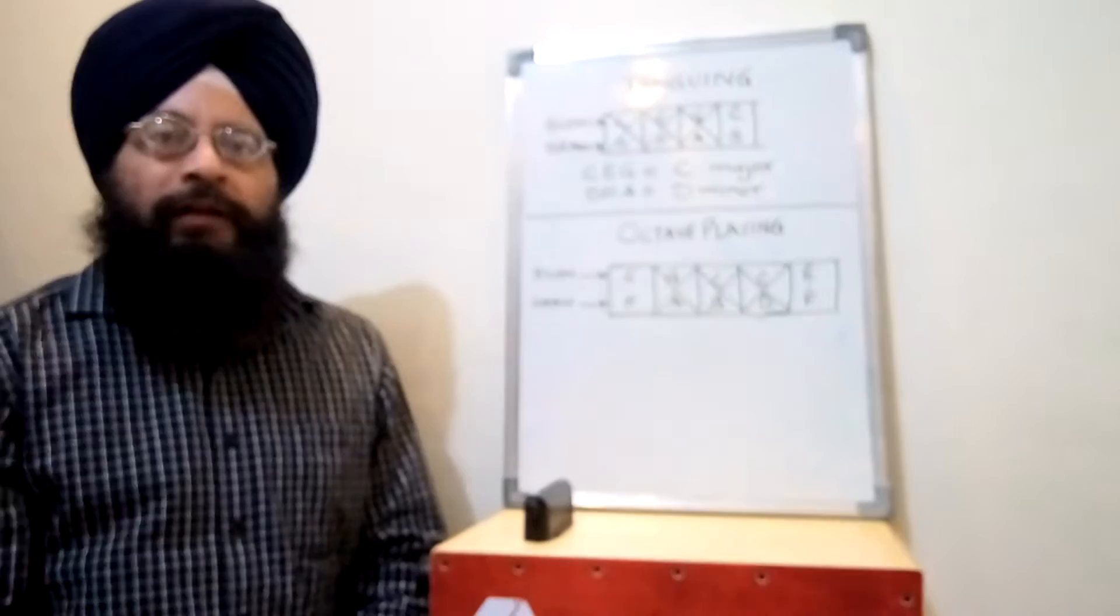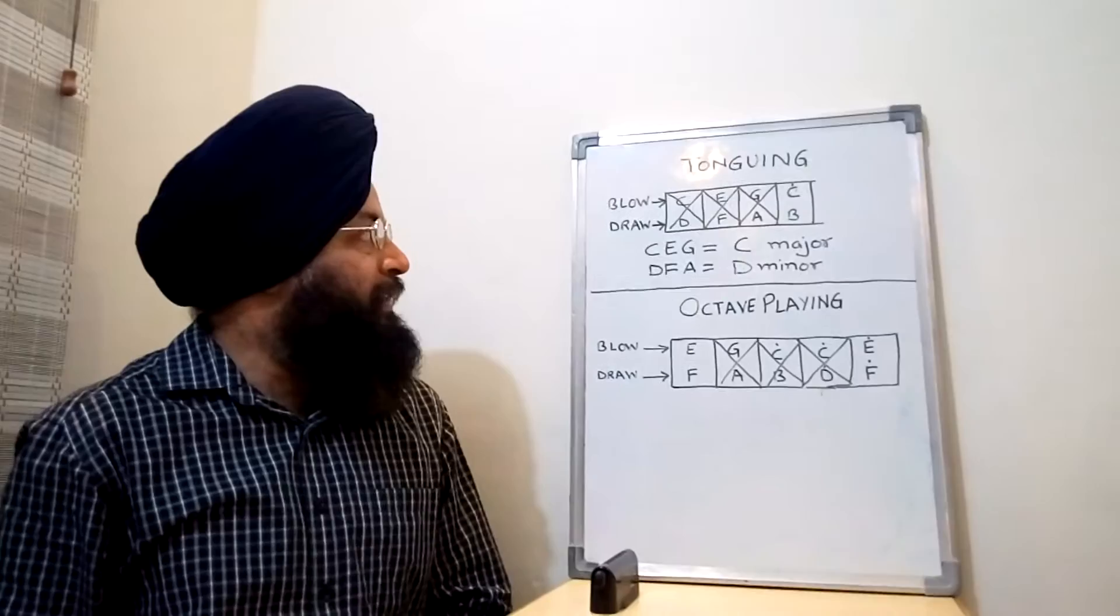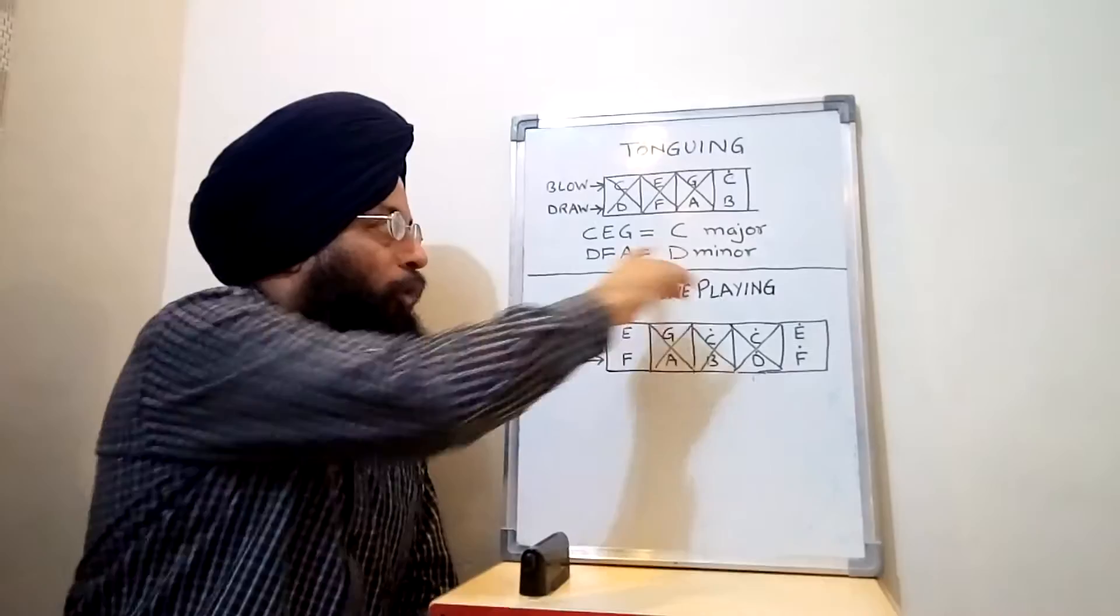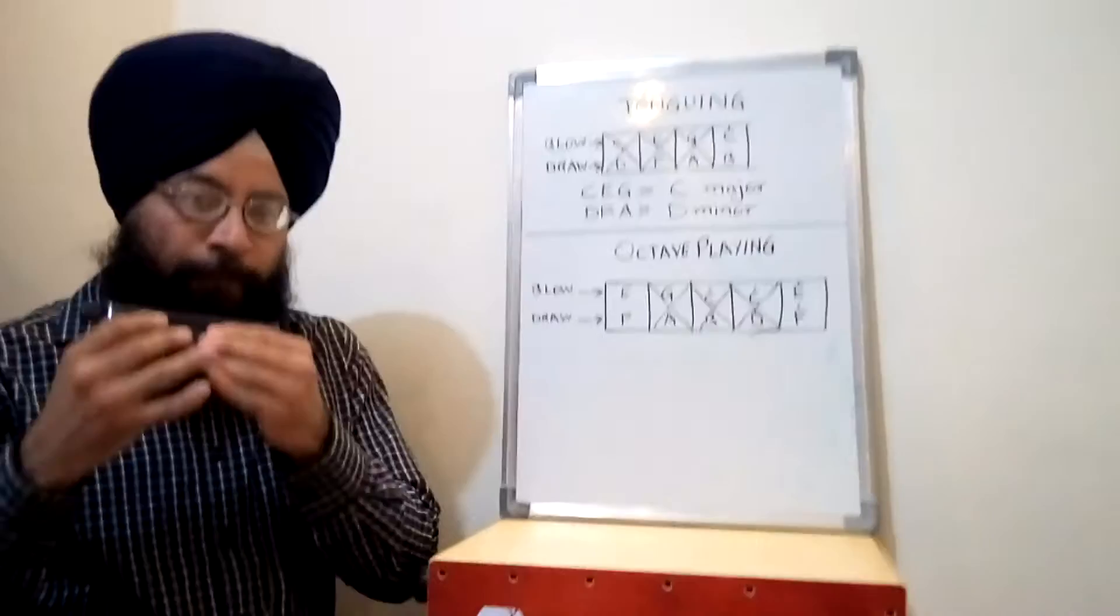So in case of tonguing, if you are playing in a key other than C, then it may sound very odd and sometimes it may spoil your song. So you have to be careful while you are doing tonguing in any song. In this normal C scale harmonica, in blow you get C major chord and in draw you get D minor chord. I will just demonstrate the very basic exercise of tonguing. It goes like this - I will be playing sare gama padanisa, so it's just like this: